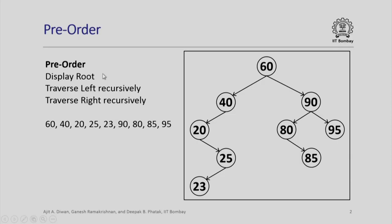Traversing binary trees can be done in three different fashions. One is called the pre-order traversal. The simple mechanism of pre-order traversal is we display the root, then we traverse left recursively.